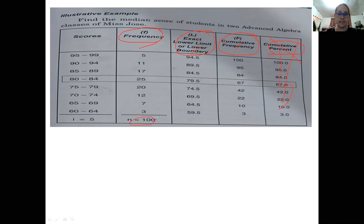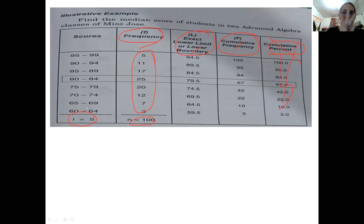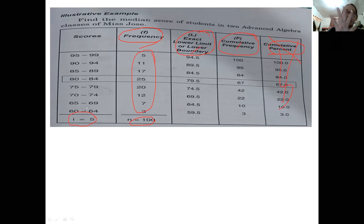To get N, just add up all the frequencies: 5+11+17+25+20+12+7+3 = 100, so N is 100. To get I, count how many values are in each class interval. For example, from 95 to 99: counting 95, 96, 97, 98, 99 — there are 5 intervals. Checking 90 to 94: 90, 91, 92, 93, 94 — still 5. So I equals 5.